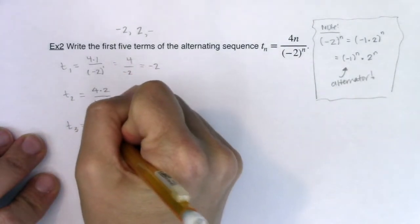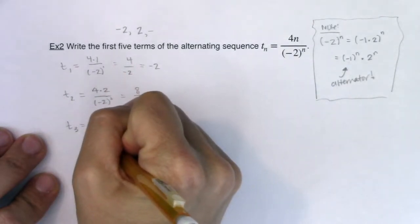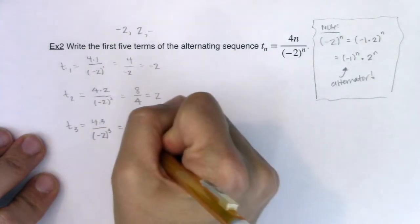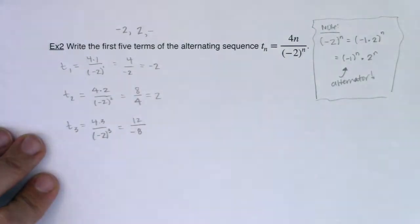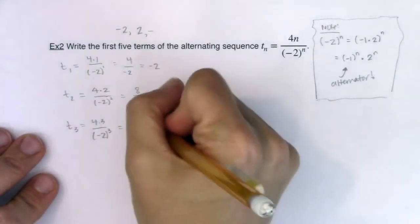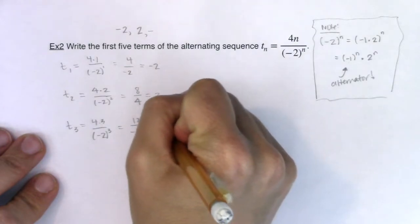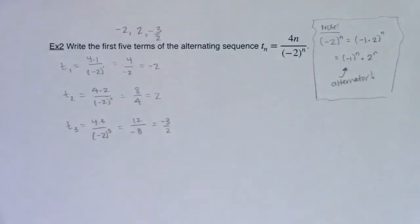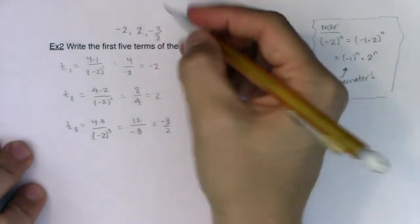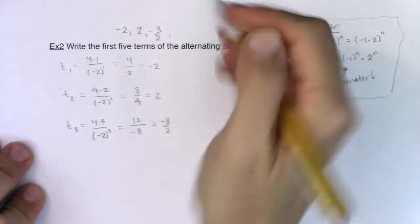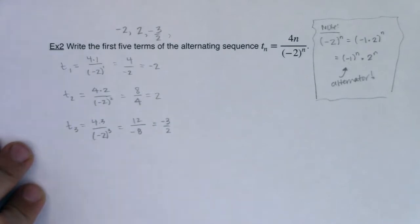So let's find t sub 3. We should go 4 times 3 over negative 2 cubed. 4 times 3 is 12. Negative 2 cubed is negative 8, and it is not negative 6. This is negative 2 times negative 2 times negative 2. So when I simplify, I get the fraction negative 3 halves, and that's great. I was banking on getting a negative number because I do have that alternator there. And in the same vein, I know when I go to my next term, this should be positive, and then the 5th term should be negative.